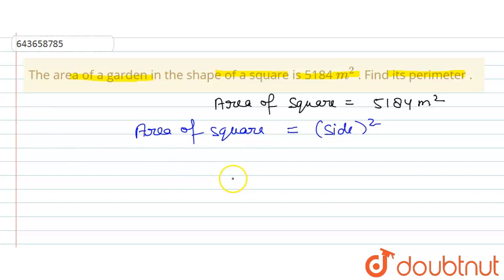So area of square which is given as 5184, so 5184 is going to be equal to side square. Now side will be equal to square root of 5184.